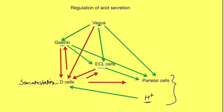But when are these stimulants activated? Now neural stimulation via vagus occurs when you see, smell or think of food. This is known as cephalic phase of HCl secretion.